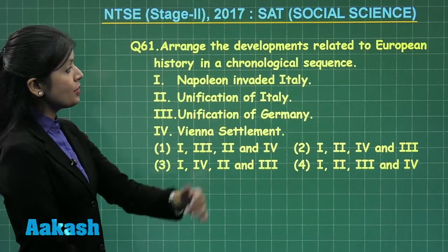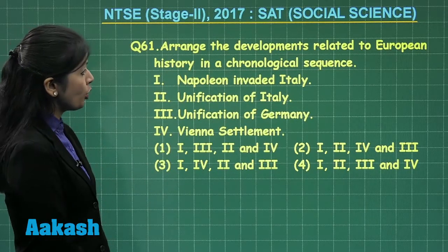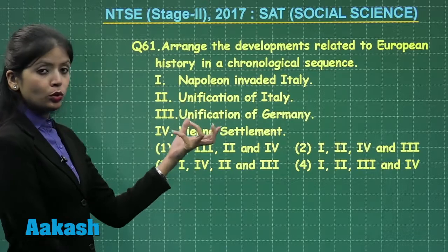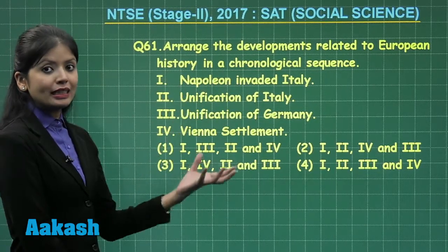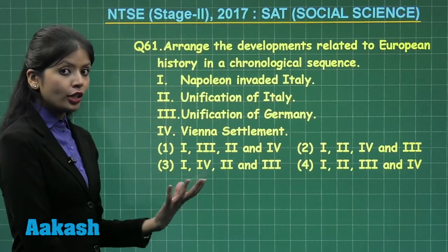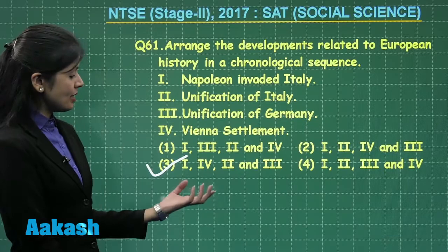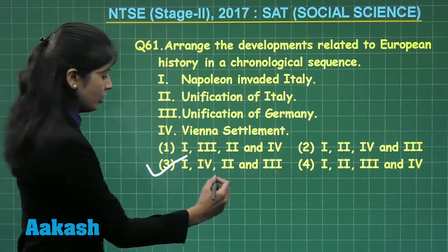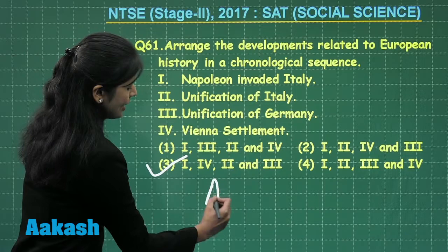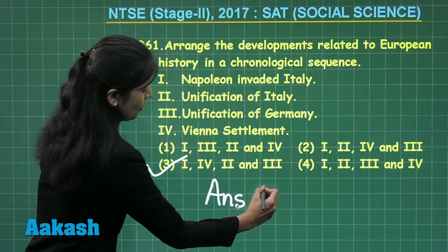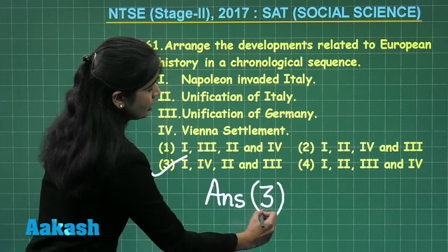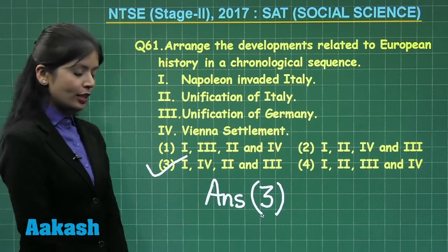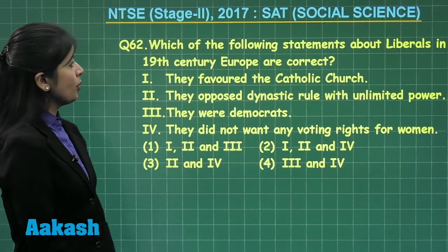Question 61 asks you to arrange the developments related to European history in a chronological sequence. The correct sequence is given in option number 3: 1, 4, 2, and 3. Therefore, the answer to this question is option number 3.